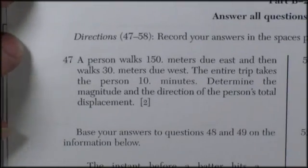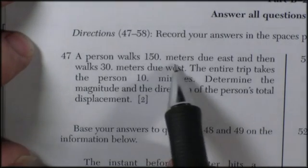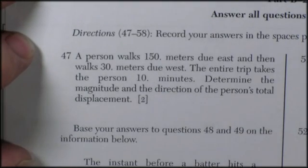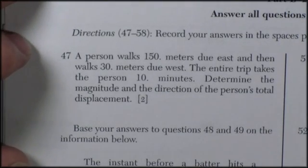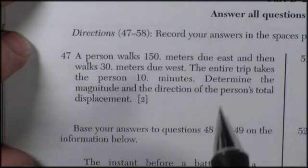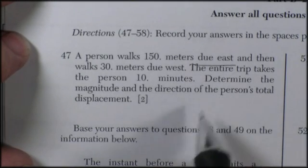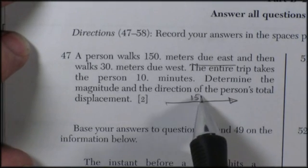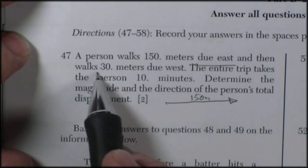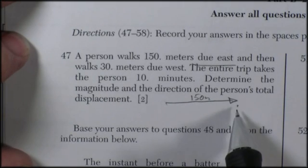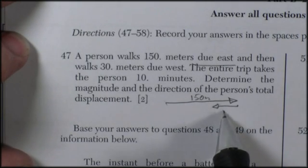Now we start off with question 47. A person walks 150 meters due east, and then - I can't do these problems without doing a diagram. I just lose track too easily. So I go 150 meters due east, 150 meters, and then walks 30 meters due west. So they stop, they turn around, they go back 30 meters.